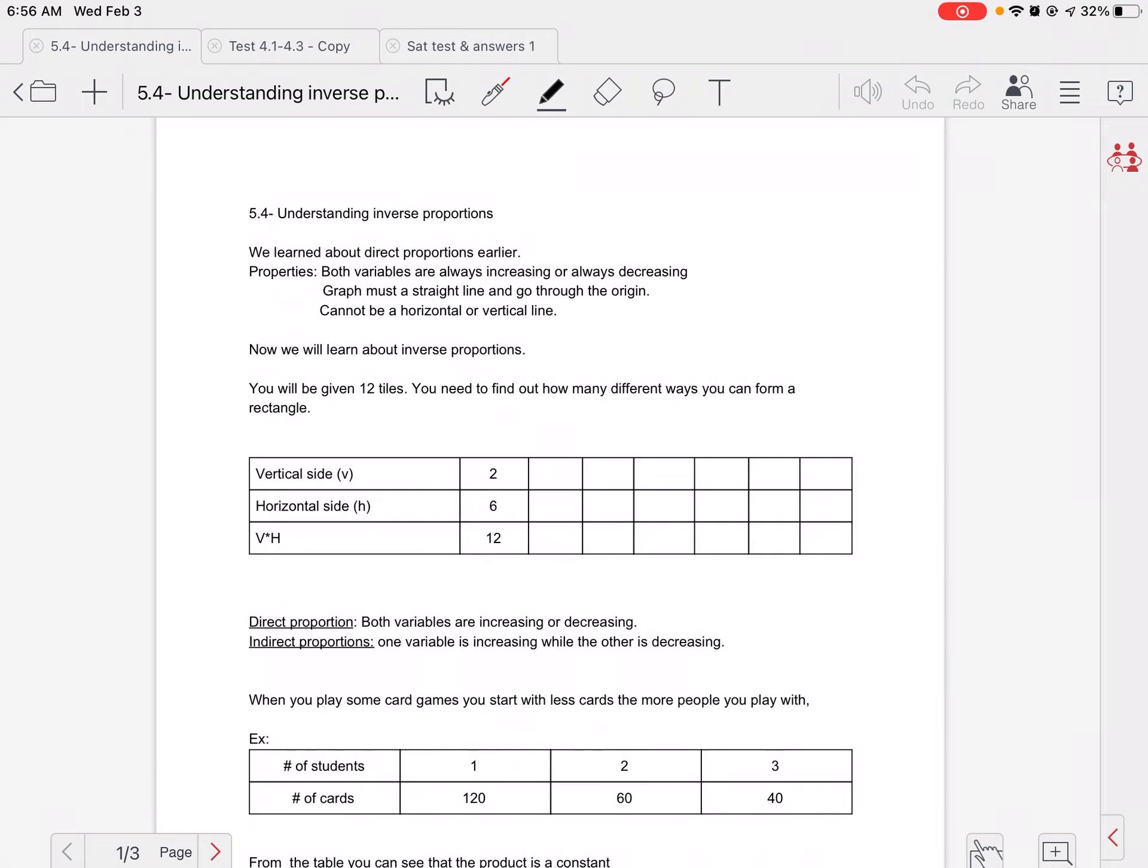We've talked about direct proportions, and properties of direct proportions are when both variables are increasing or always decreasing. So they increase together or they decrease together. A graph must be a straight line and go through the origin, and that cannot be horizontal or vertical.